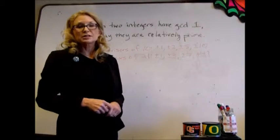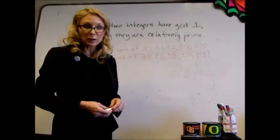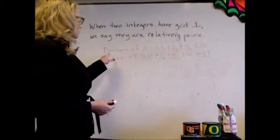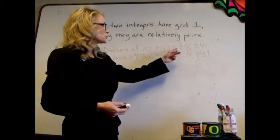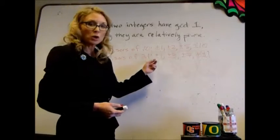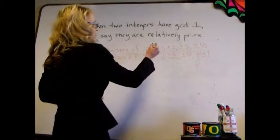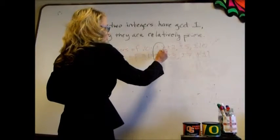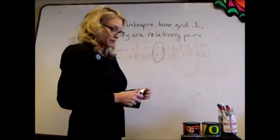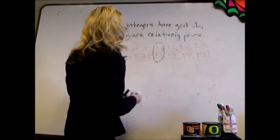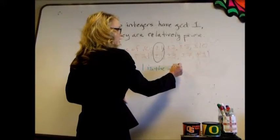When two integers have greatest common divisor 1, then we say that they are relatively prime. For example, the divisors of 10 are plus or minus 1, 2, 5, and 10. The divisors of 21 are plus or minus 1, 3, 7, and 21. You can see that plus or minus 1 are the only numbers we have in common, so 1 is the GCD of 10 and 21.